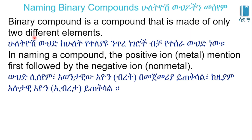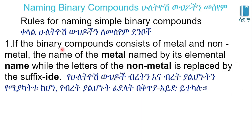We are going to show you how to name a compound. The positive ion, or metal, is mentioned first, followed by the negative ion, or non-metal. If the binary compound consists of a metal and a non-metal, the name of the metal is named by the element, while the ending of the non-metal is replaced by the suffix -ide.